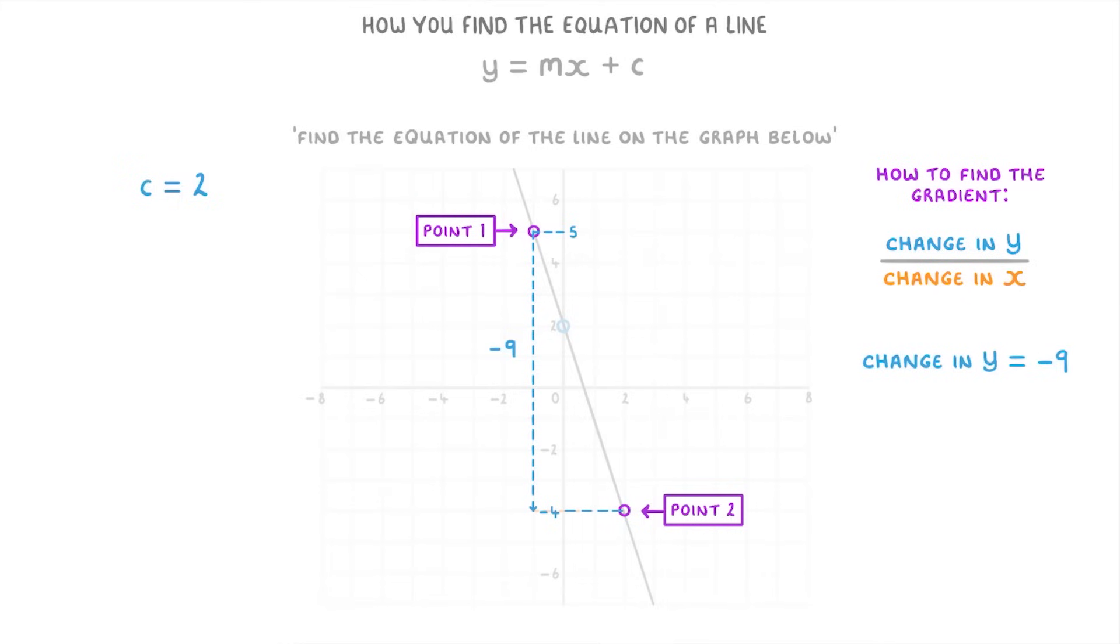So our change in y is minus 9. In the same way, the horizontal arrow goes from x equals negative 1 over to x equals 2, which gives us a change in x of positive 3.